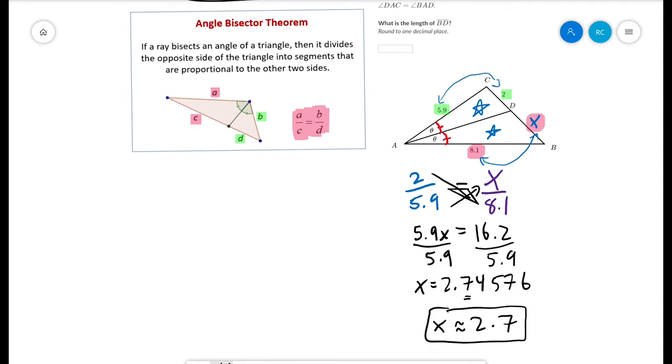So again, it's just another proportion setup problem. The main reason I assigned this is not because the angle bisector theorem is going to be super important, but because I want you to get practice solving these proportions. So we're going to copy one more of these.